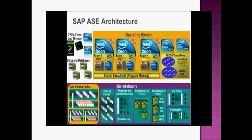This is the basic Sybase architecture. The operating system is very transparent to the Sybase server. The operating system has some shared programs and these programs are allocated to the engines. There are multiple engines — engine 0, engine 1, and so on — and these engines provide access for running and executing processes.